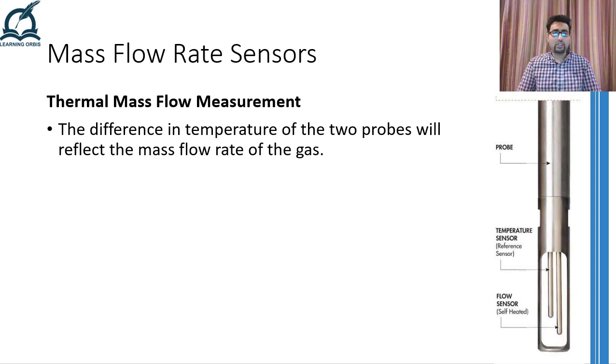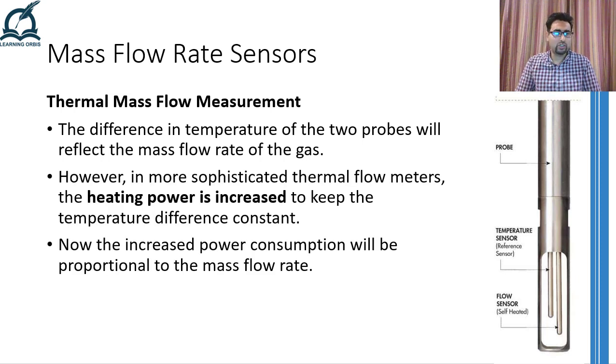At this point, there are two versions of this mass flow rate sensor. In the first one, the temperature difference between the two probes will be directly proportional to the mass flow rate of the fluid. Whereas in the second version, additional power is supplied to the heater present in the flow sensor probe so that the difference between the reference and the flow sensor probe is tried to maintain. In this version, the power required by the heater to maintain the temperature difference will be directly proportional to the mass flow rate of the fluid.